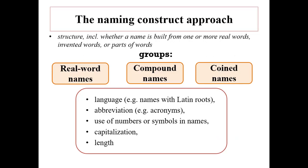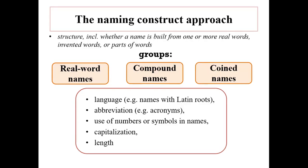Now let's turn to the naming construct approach. Naming construct is about structure, including whether a name is built from one or more real words, invented words, or parts of words meshed together to form something new. While the semantic approach is best conceptualized as a smooth continuum from descriptive to abstract, construct is typically conceived of as three discrete groups: real word names, compound names, and coined names. Beyond these three groups, construct can also capture factors such as language, abbreviation, use of numbers, symbols, capitalization, and the length of names.